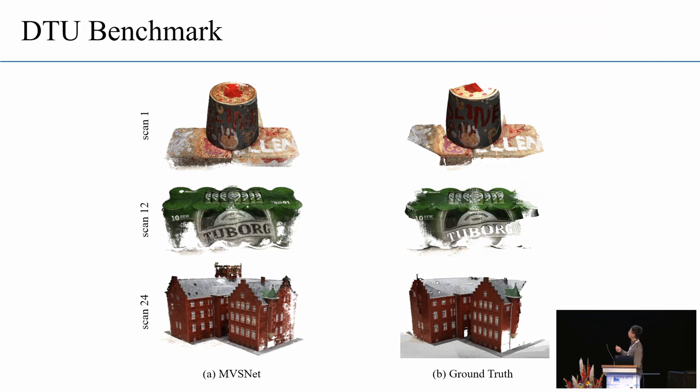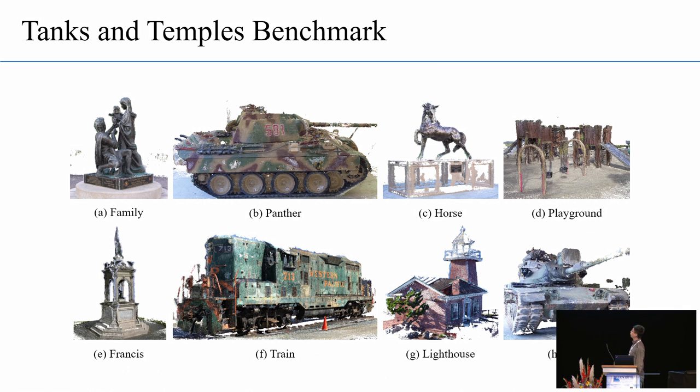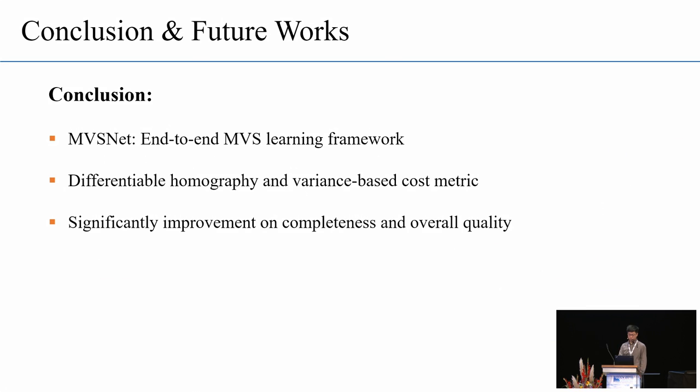And this is a close comparison between our result and the ground truth point cloud. And we have also evaluated our method on the large-scale outdoor Tanks and Temple dataset. And as the ground truth of the depth map are not available in this dataset, we just trained the model on DTU directly and applied it to the Tanks and Temple dataset without fine-tuning. And our method ranks first before mid-April. And it is the first learning-based method submitted to this online benchmark. And here is the qualitative result in the Tanks and Temple dataset.